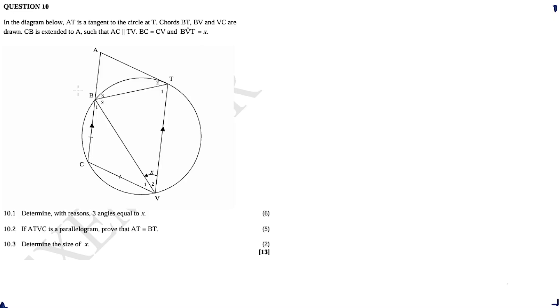We are given a shape where UAT is a tangent to the circle at T. Chords BT, BV, and VC are drawn. CB is extended to A such that UAC is parallel to TV, and BC is equal to CV. So we are given these conditions.